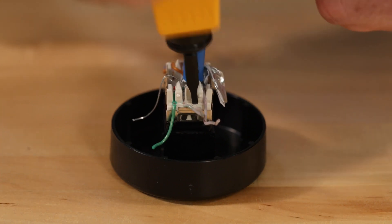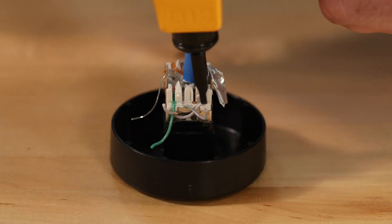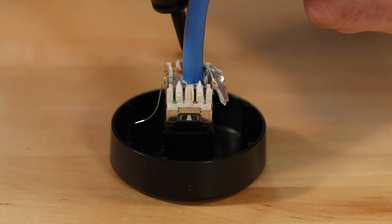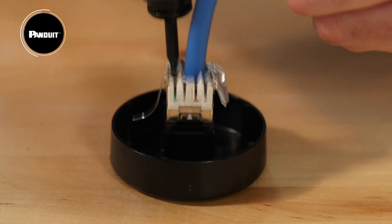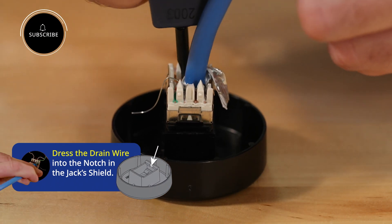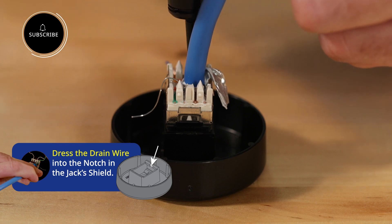Remove any excess from each conductor. Dress the drain wire into the notch in the jack's shield.